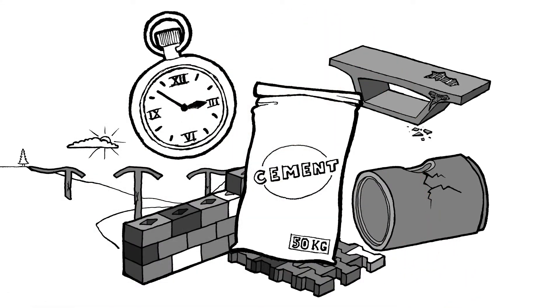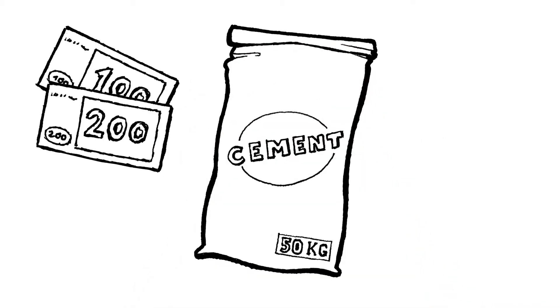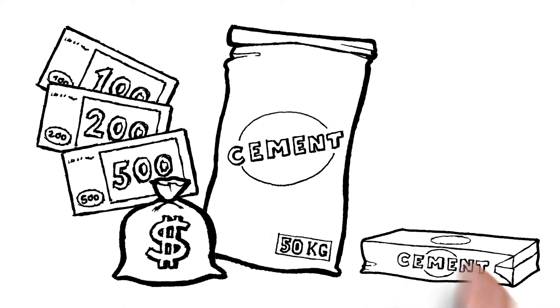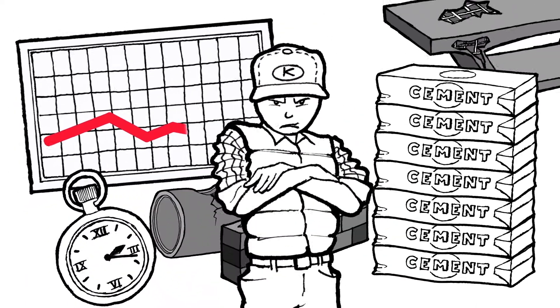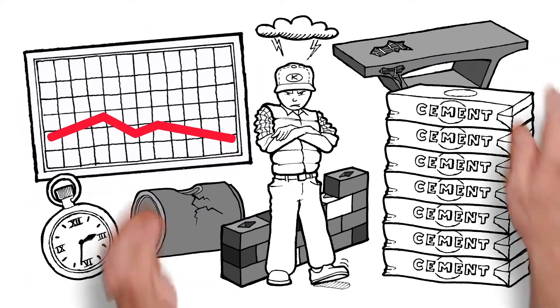The most important ingredient in concrete is cement and cement is very expensive. All of this is very bad for Kahl's business, which makes Kahl very unhappy.